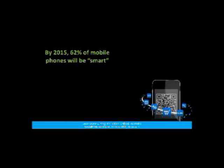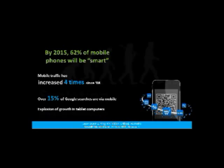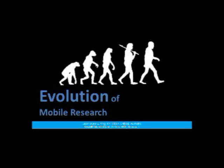I'll start by giving you some background information. It's been estimated that by 2015, 62% of mobile phones will be smart. Overall mobile traffic has increased four times since 2008. Right now about 15% of Google searches are conducted via mobile, and that doesn't even take into consideration the growth of tablet computers over the last year or so.